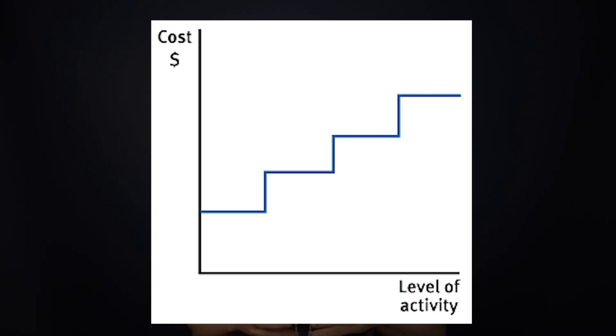If we were to look at this in a graphical format it would look something like this. We can see that the cost jumps up at certain intervals of activity. All we need to calculate a step cost is the total activity level, the activity per step, and the cost per step.